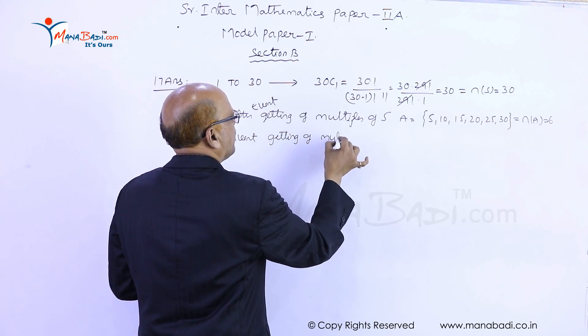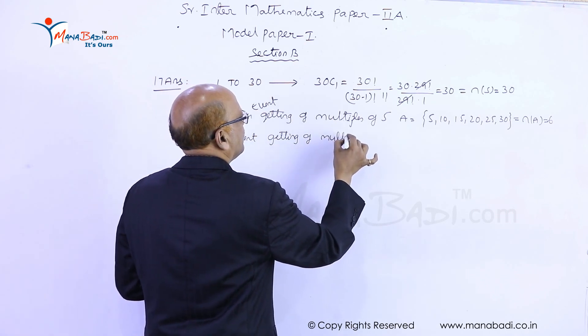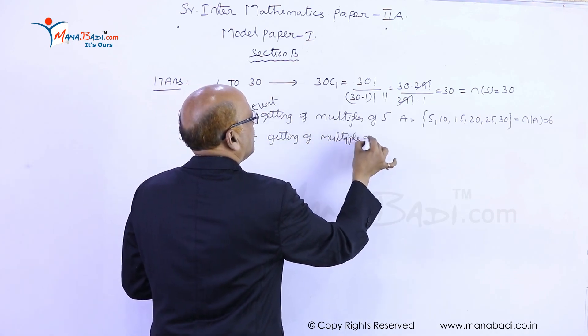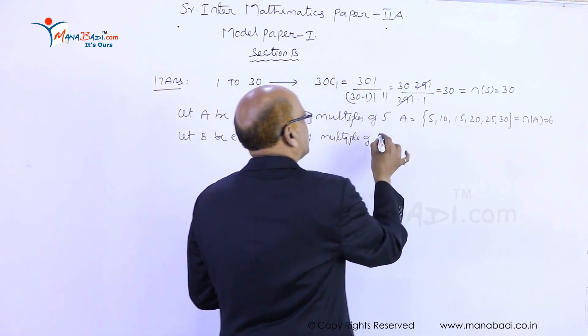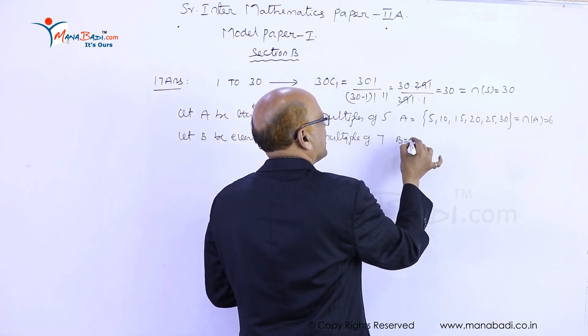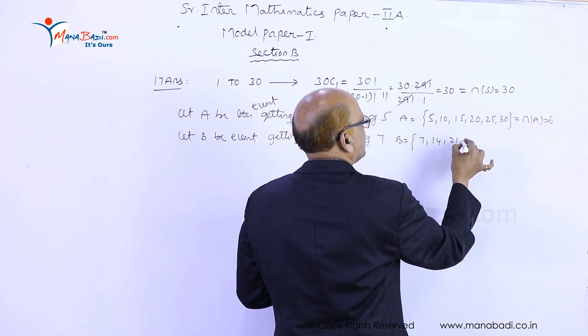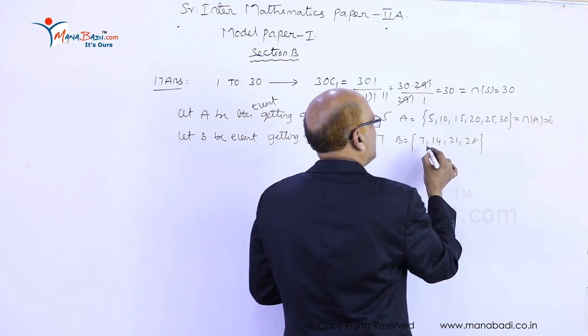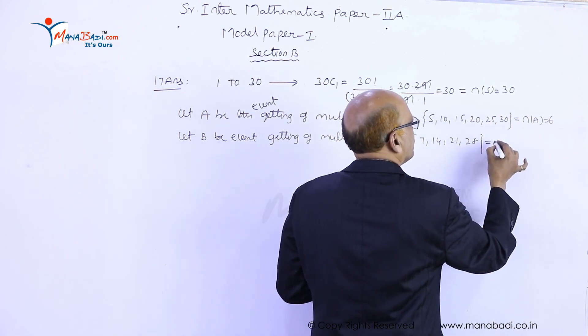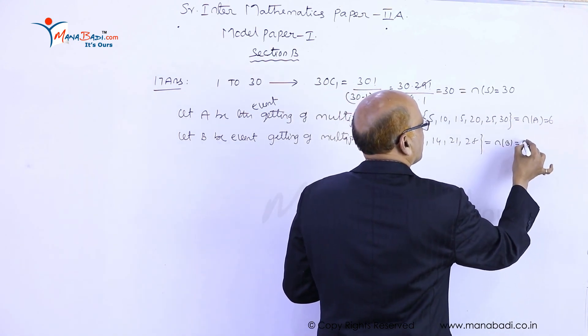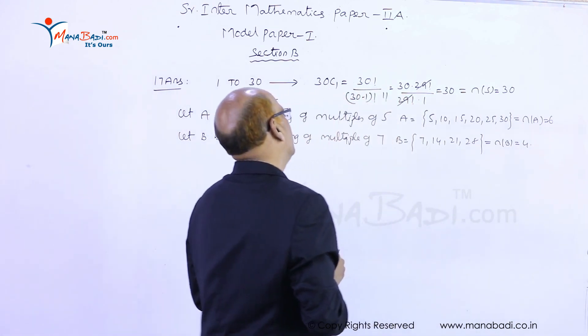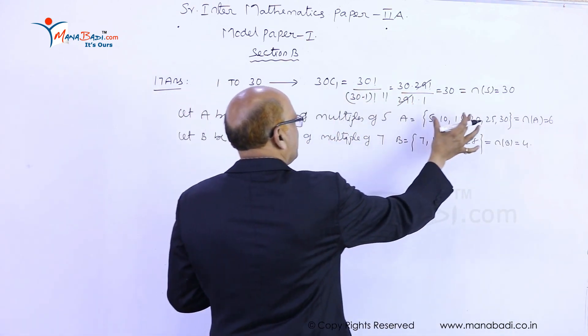That is B equals 7, 14, 21, 28. So number of elements in B, n(B), equals 4.